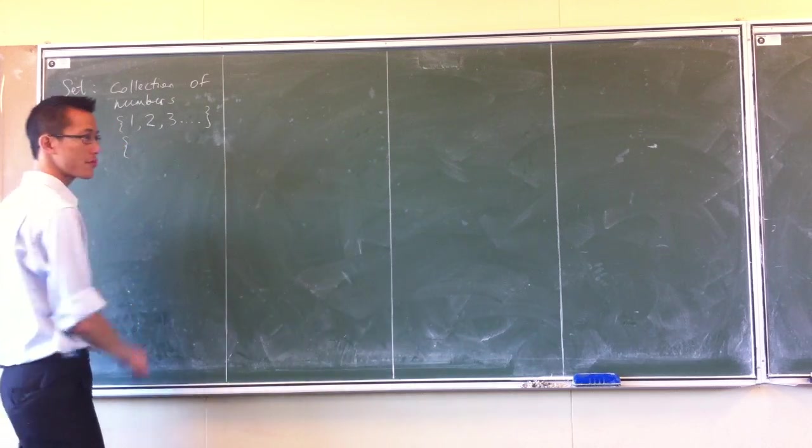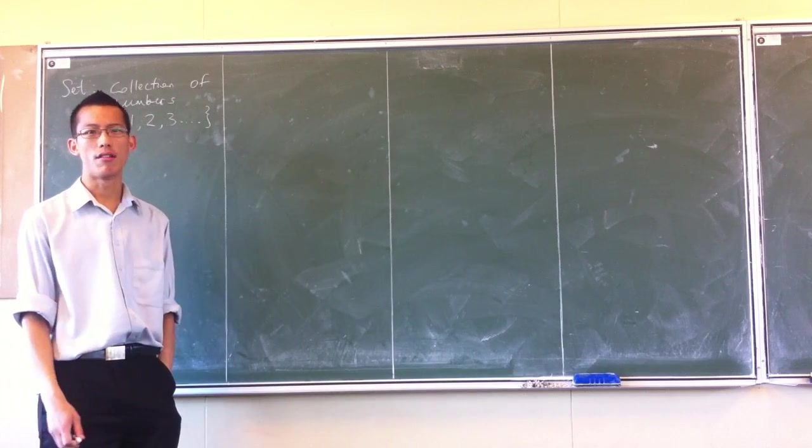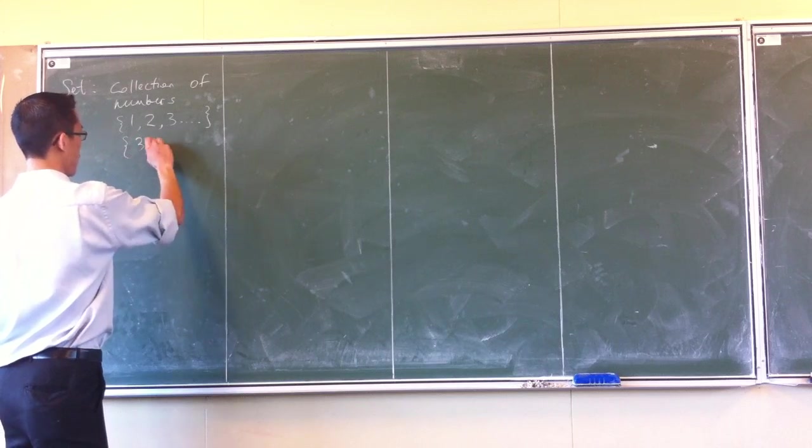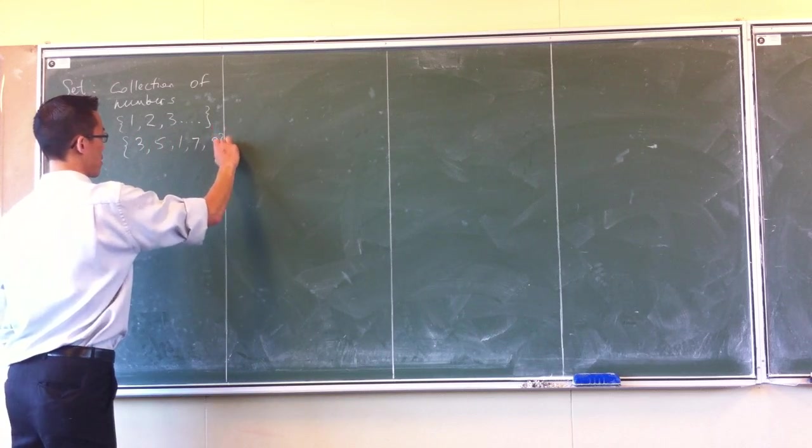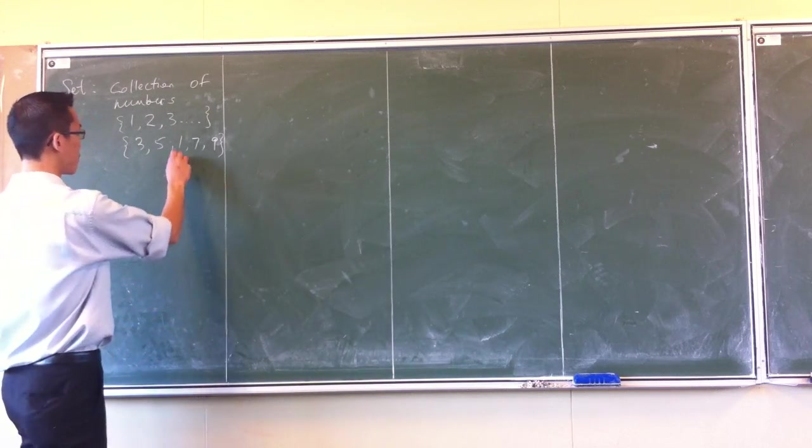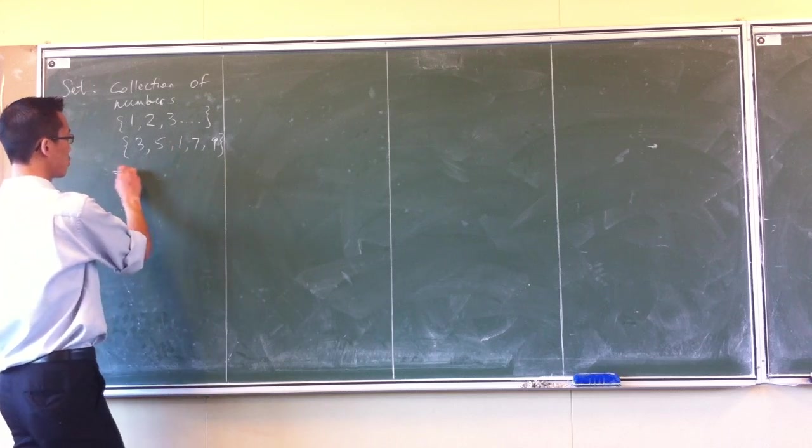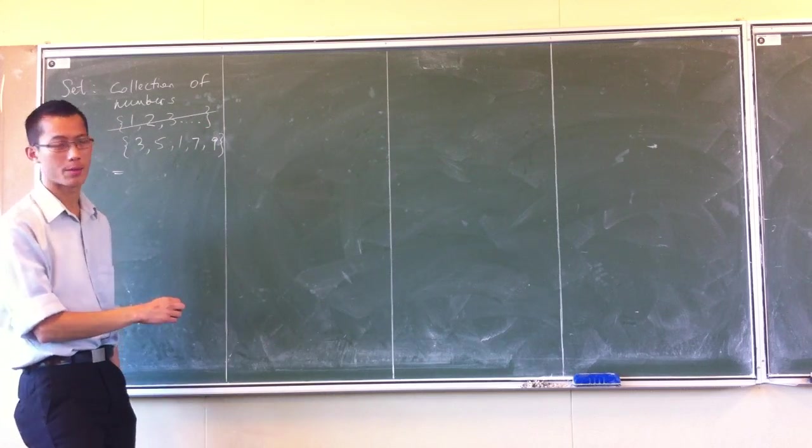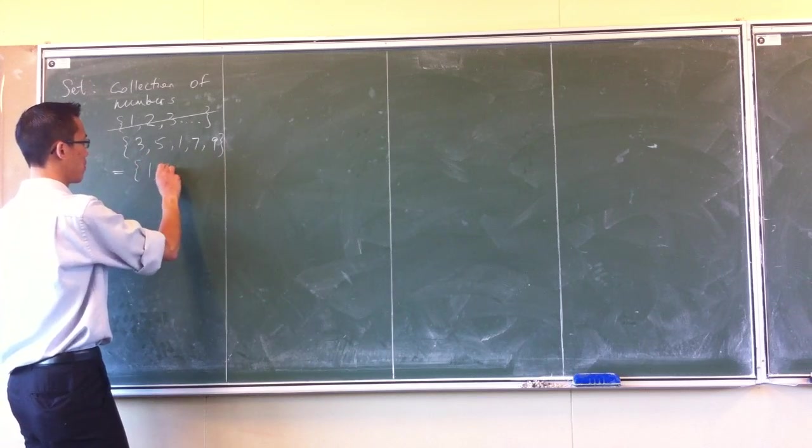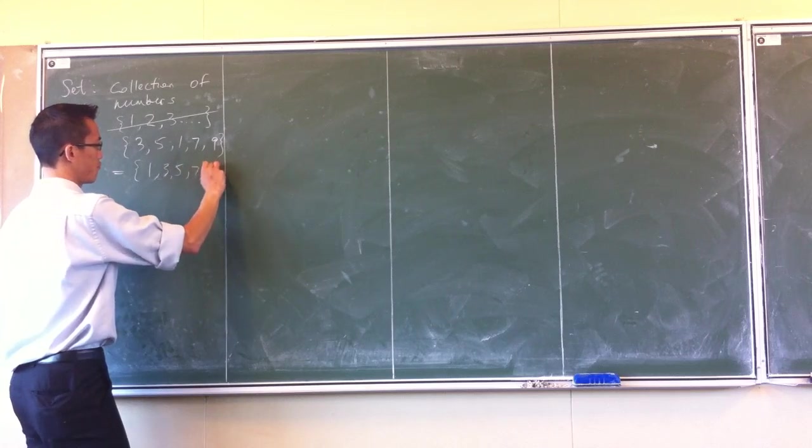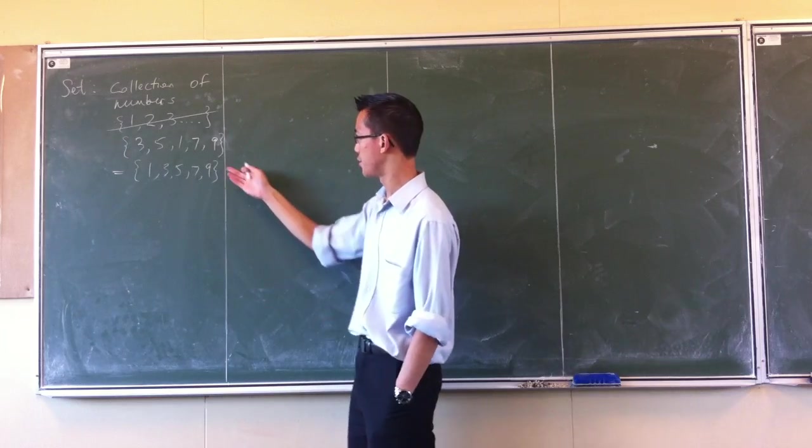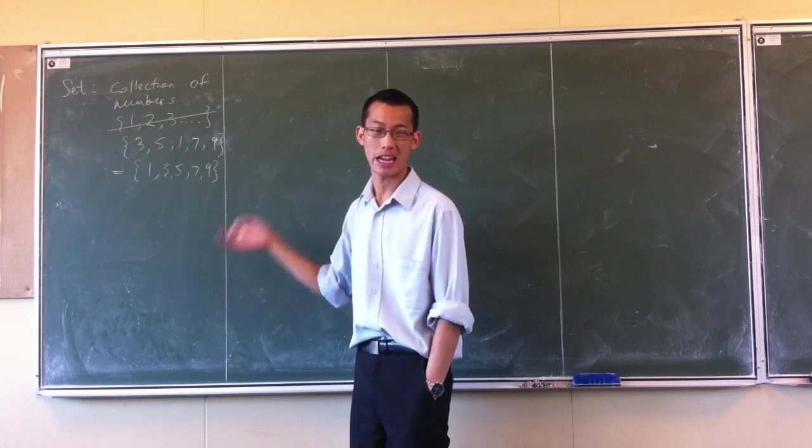For instance I could say the set of odd numbers under 10, so I could say 3, 5, 1, 7, 9. That would be the set of numbers. Now really important for you to get that this set here would be equal to this set. Namely that order doesn't matter in a set. It's just that these five numbers, those five numbers, same deal, they're equivalent.